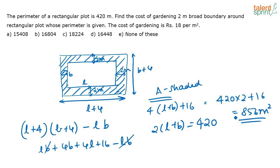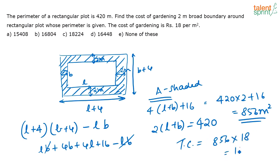That is the area we need to garden, and the cost per meter squared is 18. So the total cost is 856 into 18, which equals 15,408 rupees. That is option A.